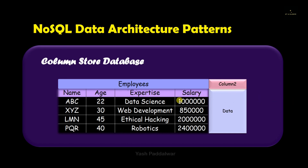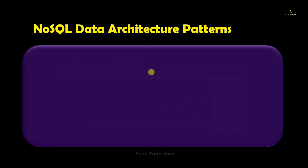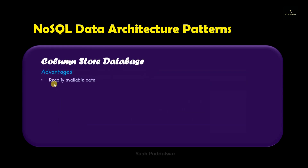Let's represent this with the help of data. You can see that 'employees' and some other columns can combine together, and a single column 'company' can come above it. Hence the 'company' column is the super column for all these columns. 'Employees' is the super column for the columns name, age, expertise, and salary. I hope by this example the concept of column store database is clear.